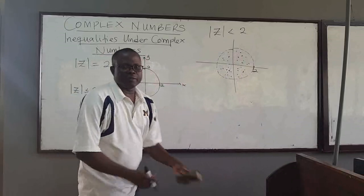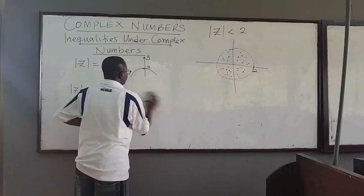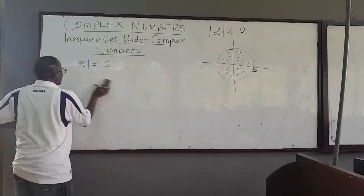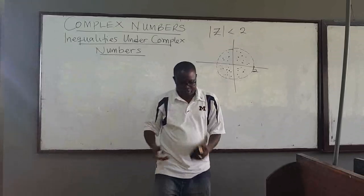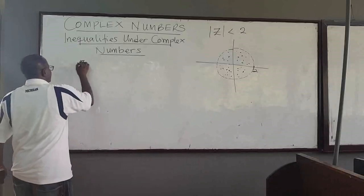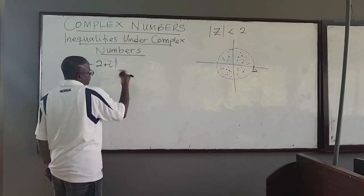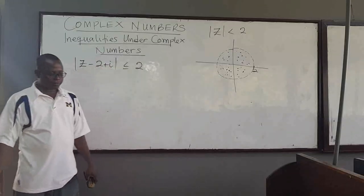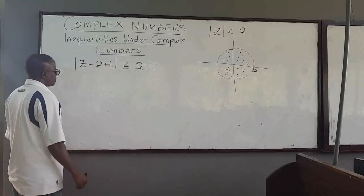Some very simple examples. The question is: what happens if I have |z - (2 + i)| less than or equal to 2? What do you do?